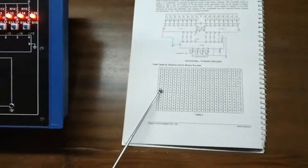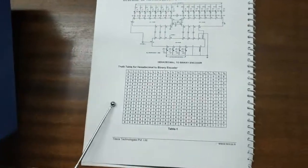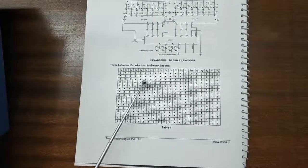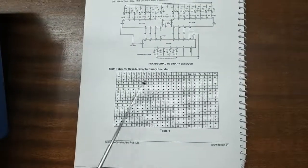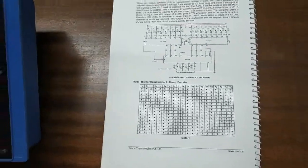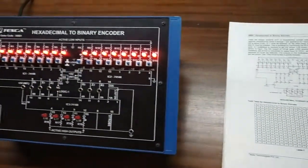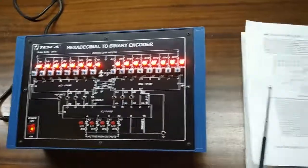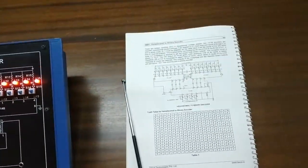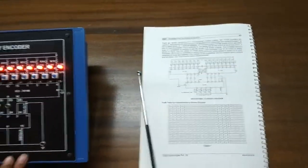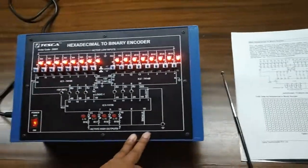This is the truth table for the hexadecimal to binary encoder. Using this kit we will verify this truth table. I have turned on the key.